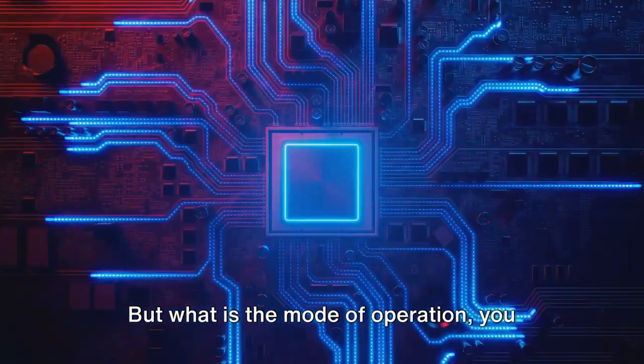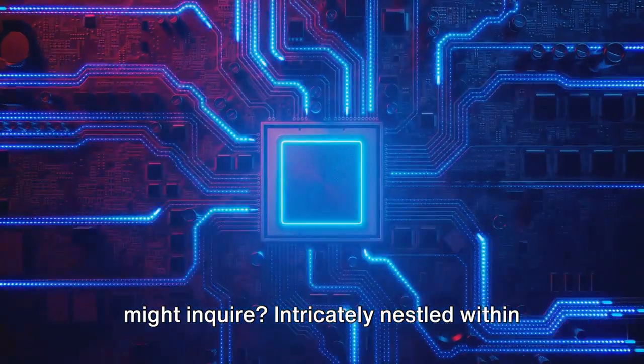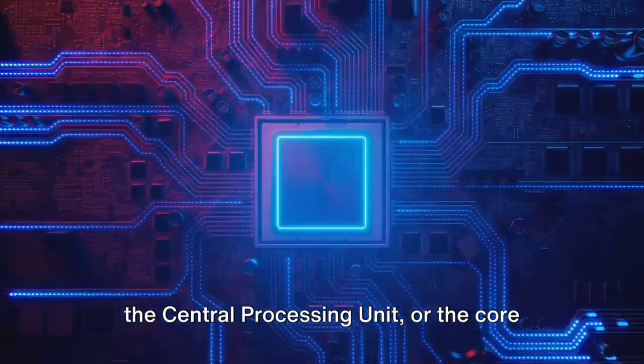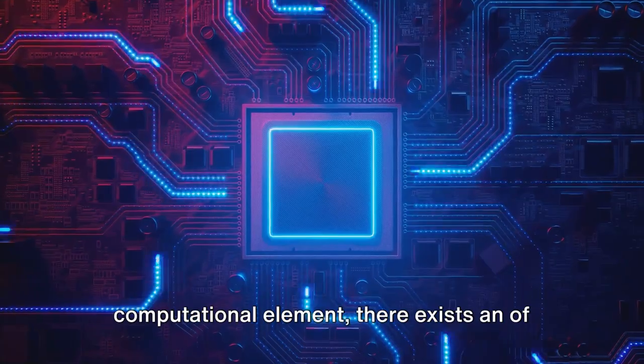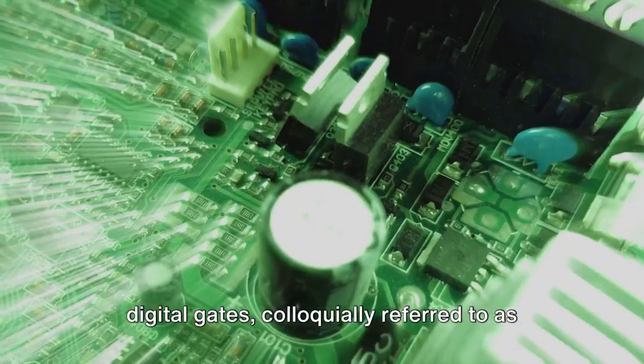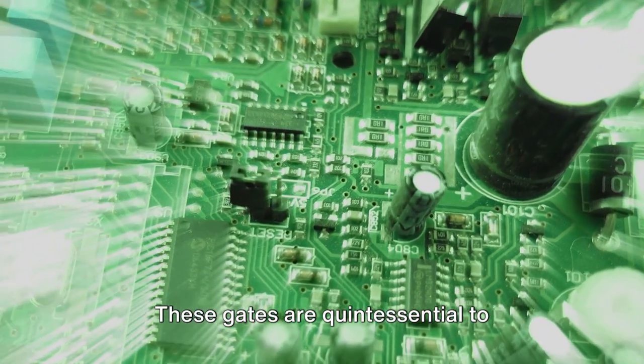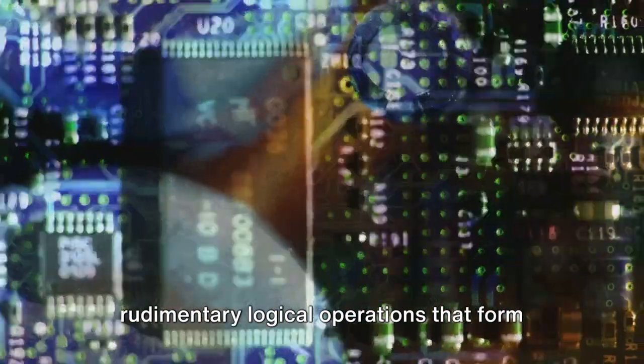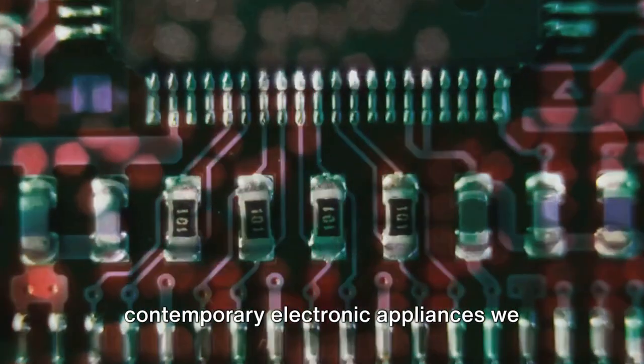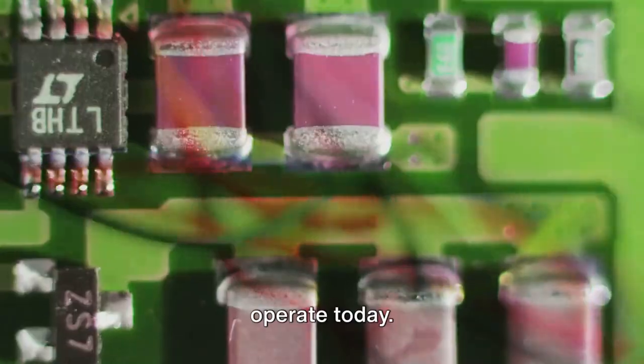But what is the mode of operation? Intricately nestled within the central processing unit, there exists an array of digital gates, colloquially referred to as logic gates. These gates are quintessential to constructing digital circuits, executing rudimentary logical operations that form the backbone of the majority of contemporary electronic appliances we operate today.